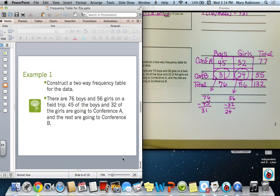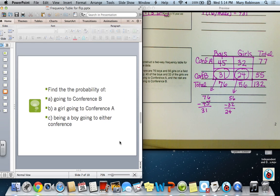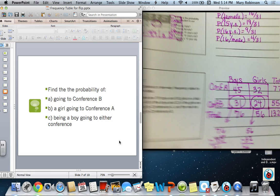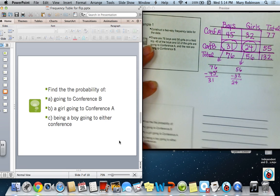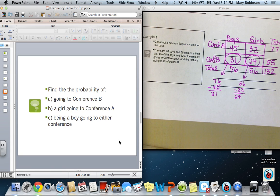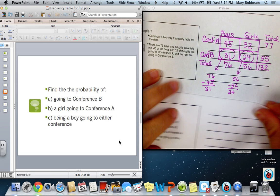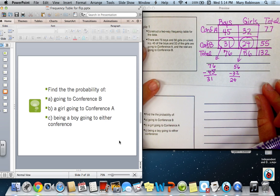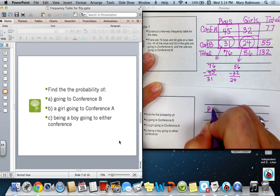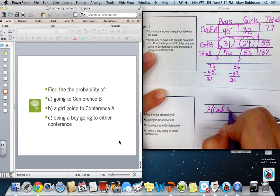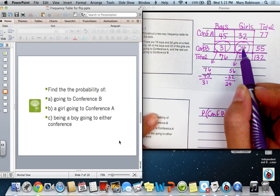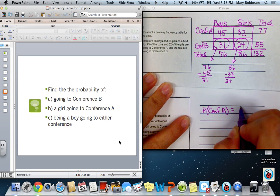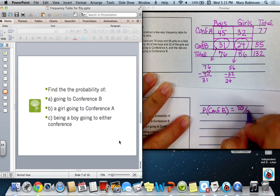Next, now that we have the two-way table constructed, we will be able to find probability. So the first thing we'd like to find is the probability of going to Conference B. We next want to find the probability of a student going to Conference B. The probability of a student going to Conference B, we would want to find the total, both male and female. Notice it does not distinguish male or female going to Conference B, so we'll use the total value. So our probability would be 55 out of our total of 132 students.